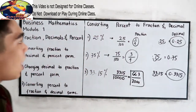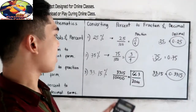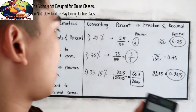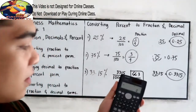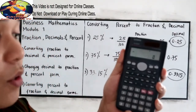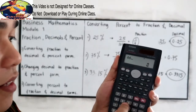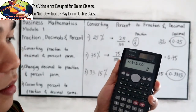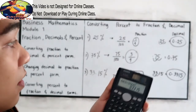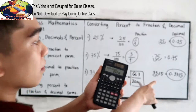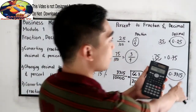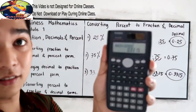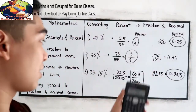Let us check using our calculator if that is correct. We're going to divide 663 by 2,000. The result confirms our answer is correct.